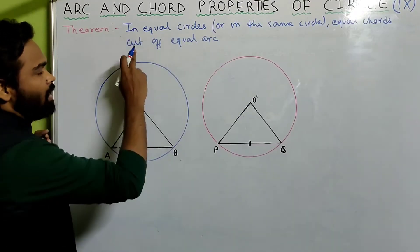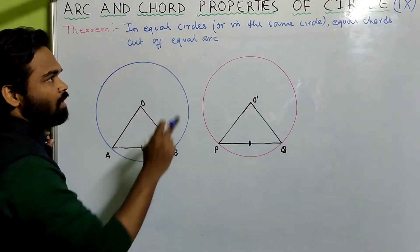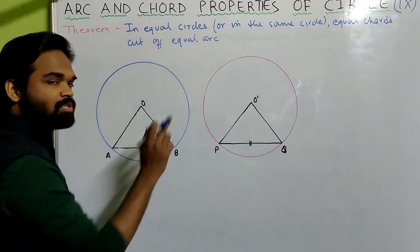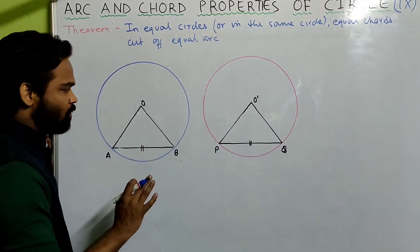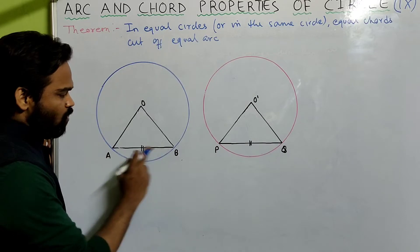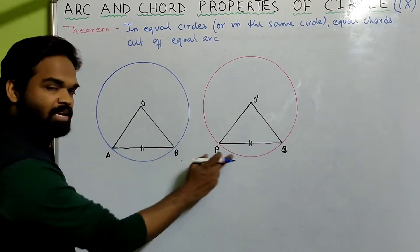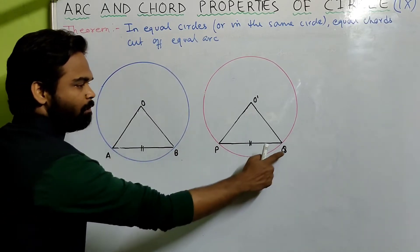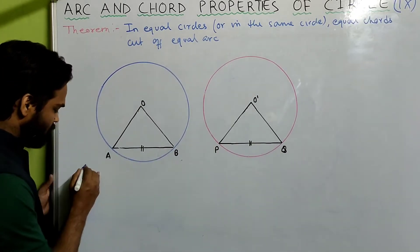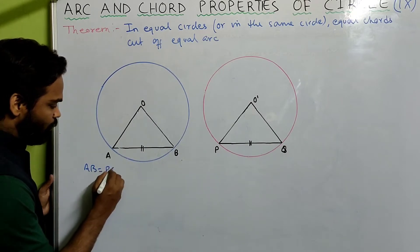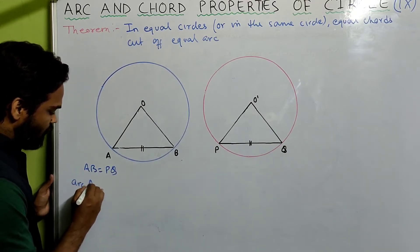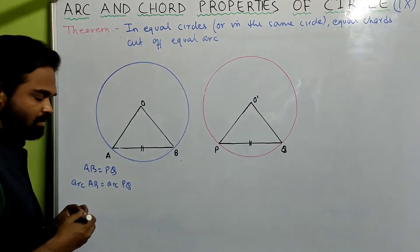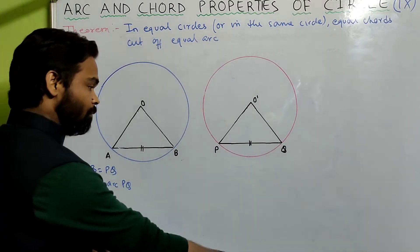Now look at the second theorem. In equal circles or in the same circle, equal chords cut off equal arcs. Which means if the two circles are equal — the radius is equal — and two chords AB and PQ are equal, then the length of the arc AB and arc PQ will be the same. If AB equals PQ, then minor arc AB equals minor arc PQ in length. Let us see how we can prove this.